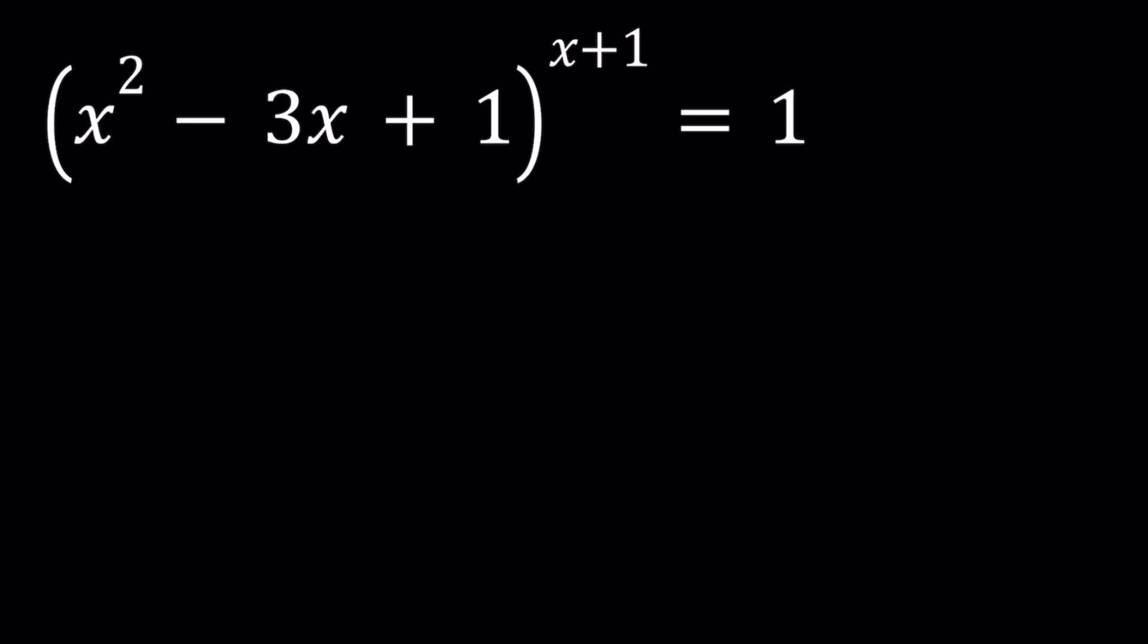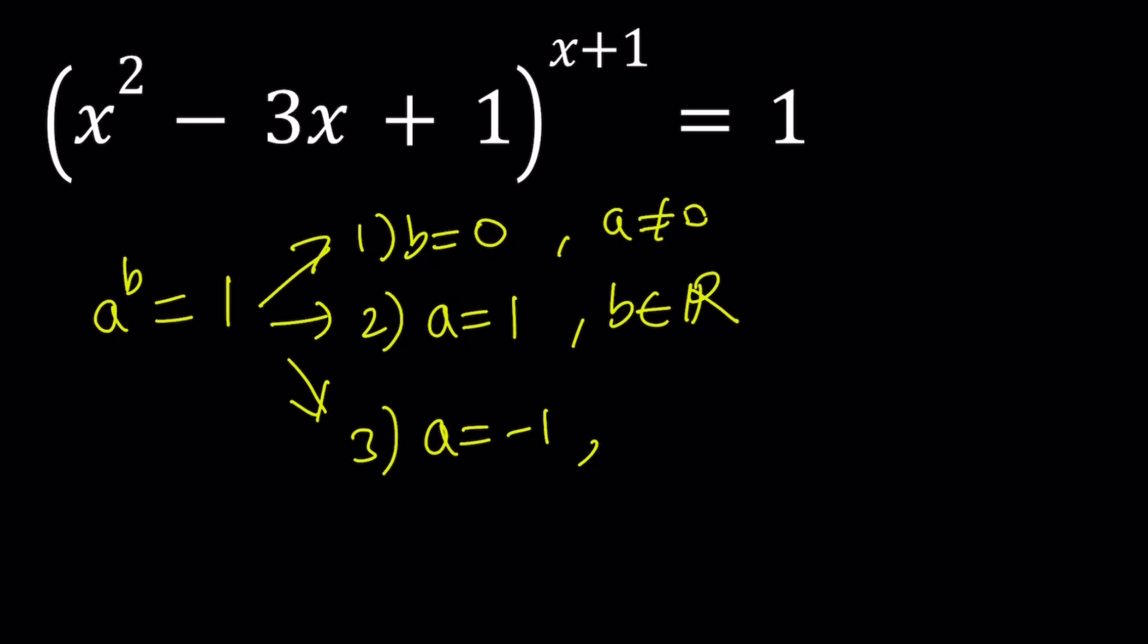When we have 1 equals an exponential expression, we usually have these cases. a to the power b equals 1 gives us three choices, if a and b are real. First case is b equals 0 and a does not equal 0. Second case is a equals 1, the base is 1 and exponent can be anything, so b is a real number. The third case is a is negative 1 and b is even.